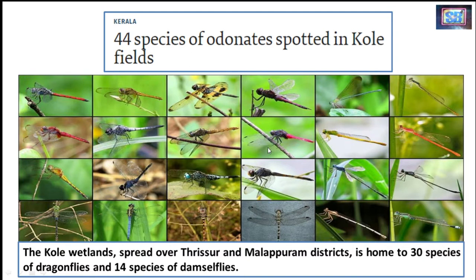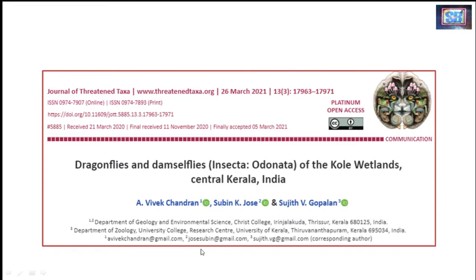The researchers have spotted 44 species of Odonates — dragonflies and damselflies — in the Kol wetland area, which is also a Ramsar site. This Kol wetland area is spread over the Thrissur and Malappuram districts of central Kerala. The researchers spotted about 30 species of dragonflies and 14 species of damselflies. This research was published in the Journal of Threatened Taxa.